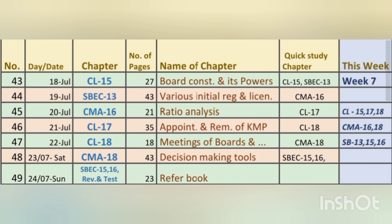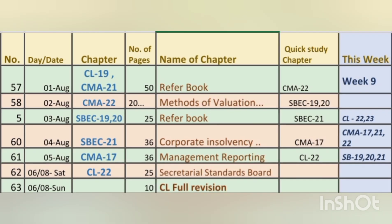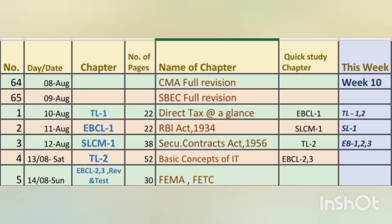Going into the seventh week we'll be having around eight chapters, and then for the eighth week around seven chapters. In the ninth week for CL, CMA, and SBC, we'll be studying around eight chapters, along with revision of CL, CMA, and SBC at the weekend. The timetable includes the number of pages as per the new book — it will change according to the printed date of the book, so refer to your book as it is an approximate estimation.